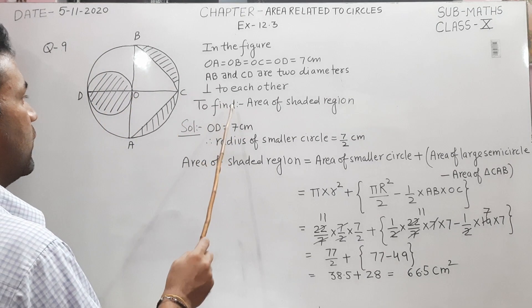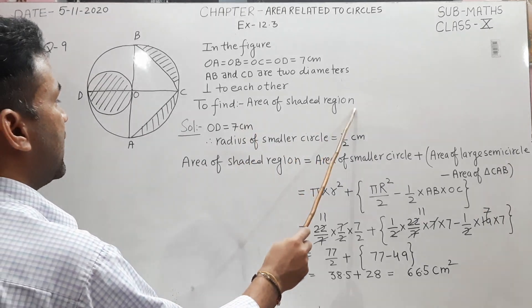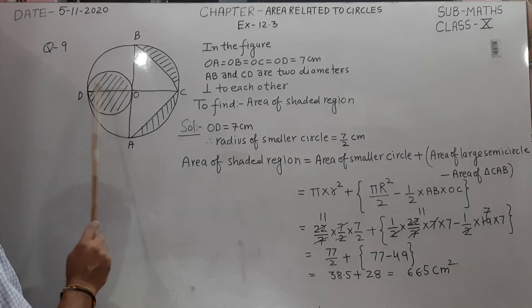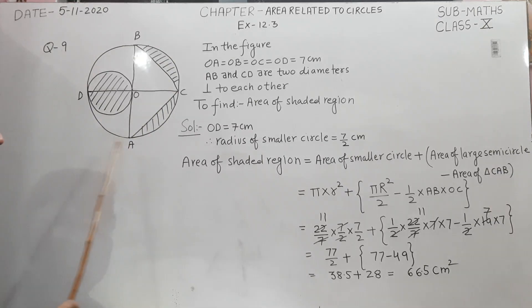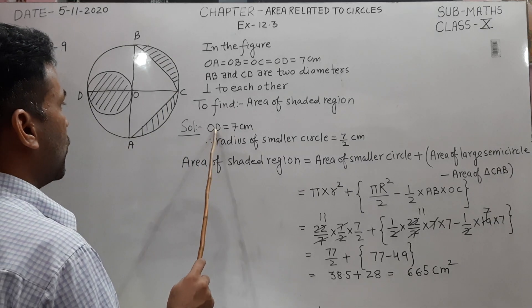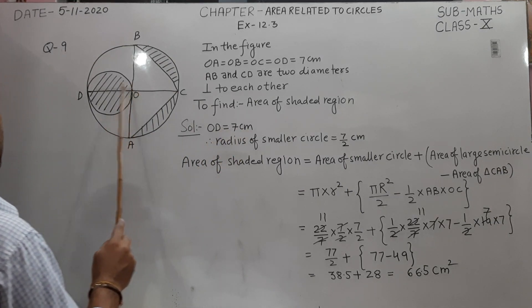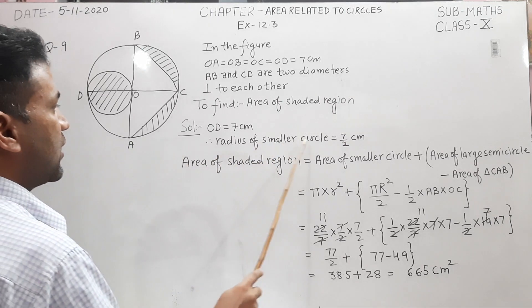We have to find the area of the shaded region, which includes this small circle and these two parts. Since OD equals 7 cm, the radius of the smaller circle is 7/2 cm.